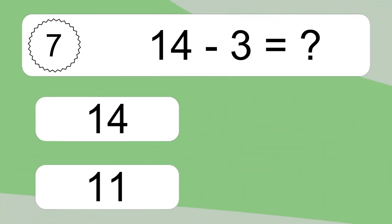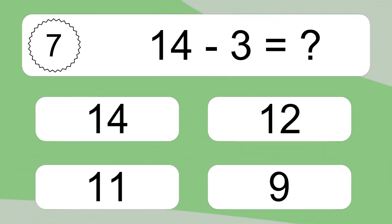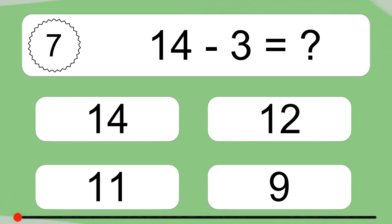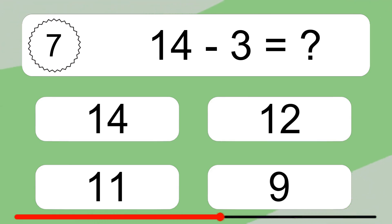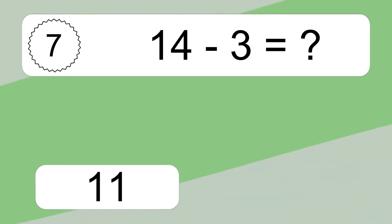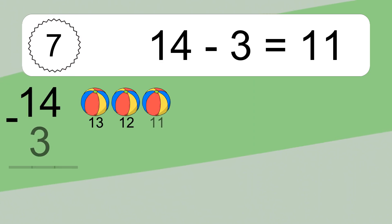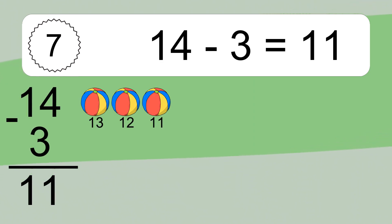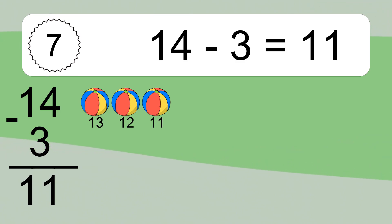14 minus 3 equals what? 14 minus 3 equals 11. Let's count it: 13, 12, 11.